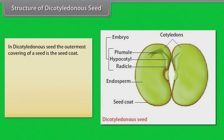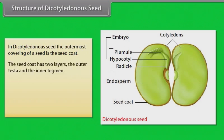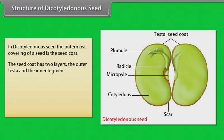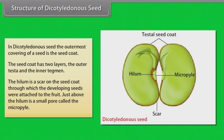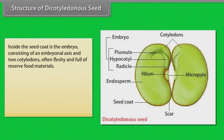In the structure of a dicotyledonous seed, the outermost covering of a seed is the seed coat. The seed coat has two layers: the outer testa and the inner tegmen. The hilum is a scar on the seed coat through which the developing seeds were attached to the fruit. Just above the hilum is a small pore called the micropyle. Inside the seed coat is the embryo, consisting of an embryonal axis and two cotyledons, often fleshy and full of reserve food materials.